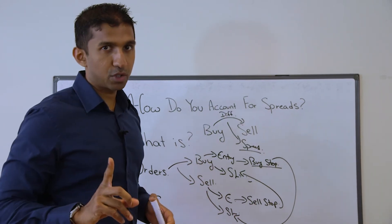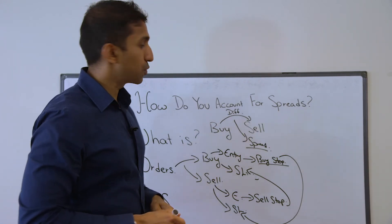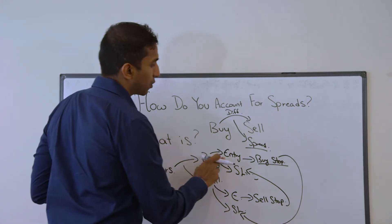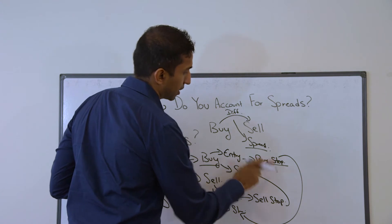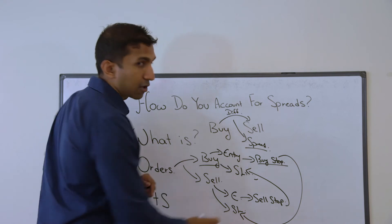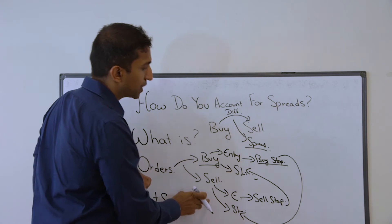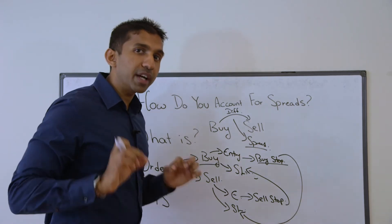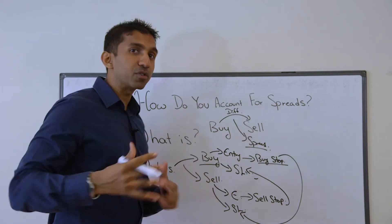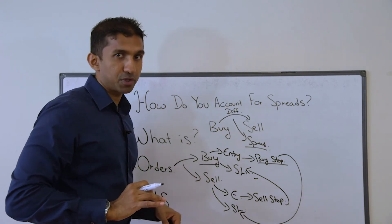Where do we add the spread to? We only add spreads to the buy orders — either if you're entering to buy something, or on your stop loss for a sell order. Either on the entry as a buy order, or as a stop loss for the sell order, is where you would add the spread to. In summary, it's all the buy orders. That can be either as an entry or as a stop loss.